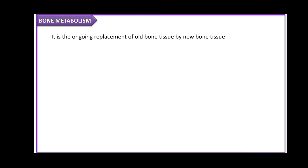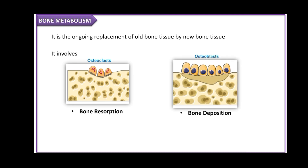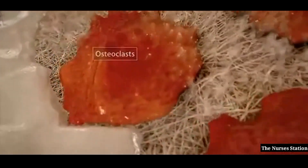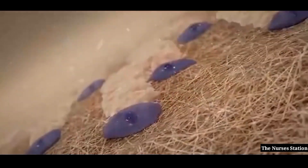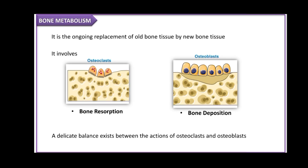This process is accomplished with the help of osteoblasts and osteoclasts. While the osteoclasts dissolve the bone tissue to release minerals into the bloodstream by the process of bone resorption, the osteoblasts lay down or build new bone tissue by the process of bone deposition. Here you can visualize how the osteoclasts are dissolving bone tissue and how the osteoblasts are developing new bone tissue. A delicate balance exists between the actions of osteoblasts and osteoclasts.